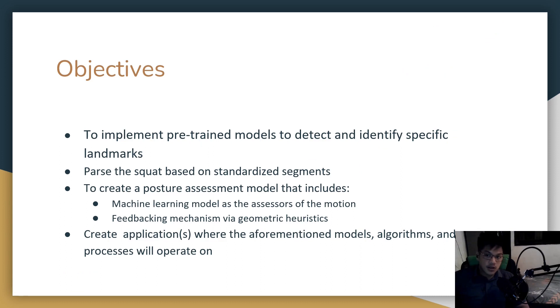The objectives of the study are to implement pre-trained models to detect and identify specific landmarks which will be handled by MediaPipe's pose estimation model, to parse the squat based on standardized segments. We have invented an algorithm that works with our pose estimation model that divides the squat into four specific segments. Also, to create a posture assessment model that includes a machine learning model as the assessor of the motion, in this case CNN, and a feedbacking mechanism via geometric heuristics. Finally, we are going to create applications where all these things will operate on. We have created two applications, which we will be demonstrating later in this presentation.